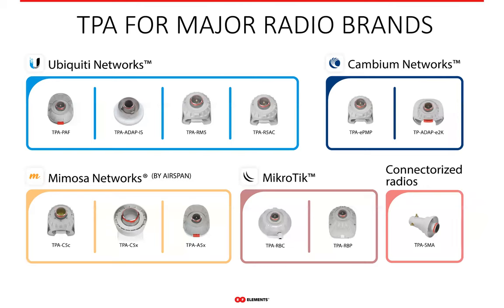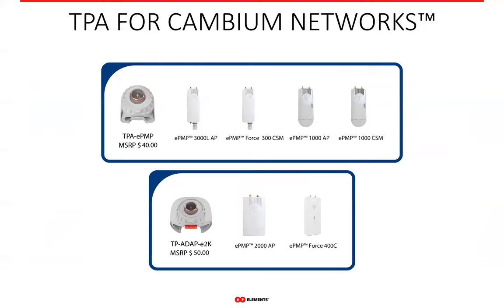We have TwistPort adapters for four major radio brands in the WISP industry: Cambium, Mimosa, Ubiquiti, and Microtik. All of these adapters are easy to use and provide reliable and safe radio installation and removal. For Cambium, we have two adapters: the TPA EPMP in the top line, compatible with EPMP 1000 and EPMP 3000 radios; and the TPA E2K adapter, working with the EPMP 2000 as well as the newer EPMP Force 400C, which is the recently released 802.11ax radio from Cambium.